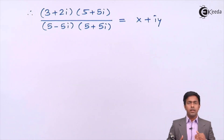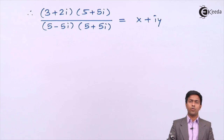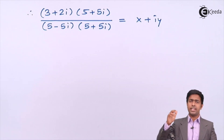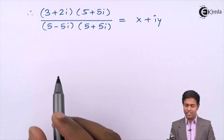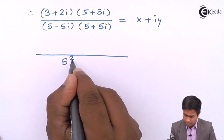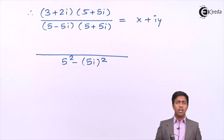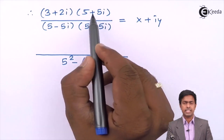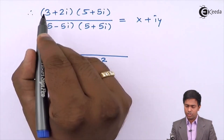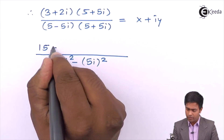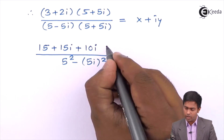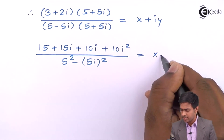Let's solve the numerator and denominator. In the denominator we have 5 minus 5i multiplied by 5 plus 5i. Using the algebraic formula (a minus b)(a plus b) equals a squared minus b squared, we get 5 squared minus (5i) squared. In the numerator, multiplying 3 plus 2i by 5 plus 5i: 3 into 5 is 15, 3 into 5i is 15i, 2i into 5 is plus 10i, and 2i into 5i is 10i squared, equal to x plus iy.